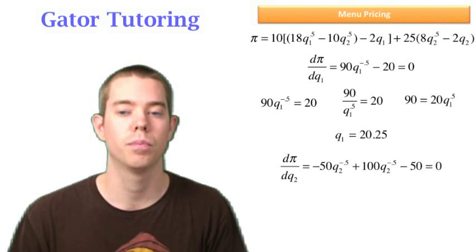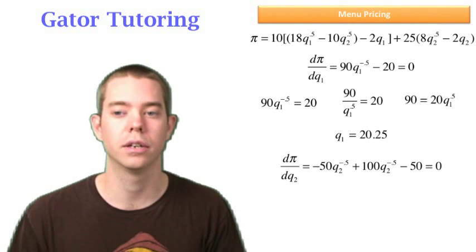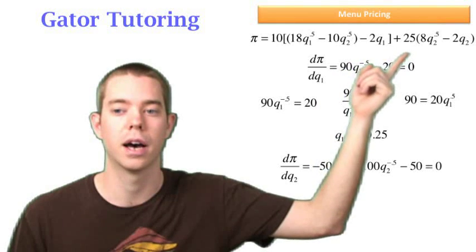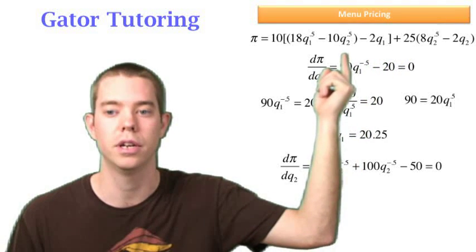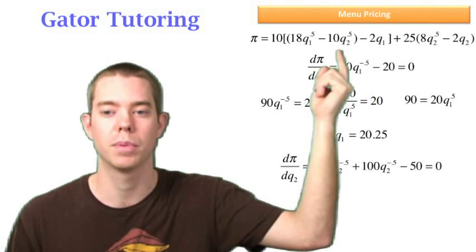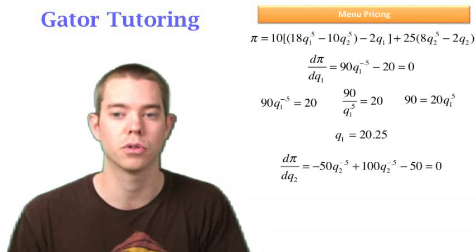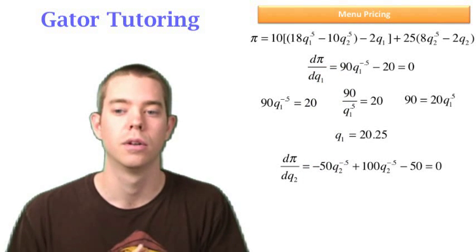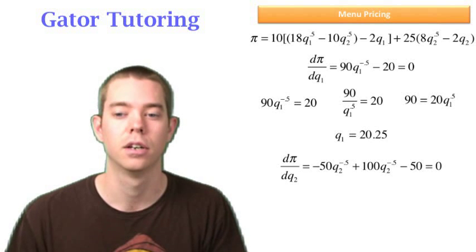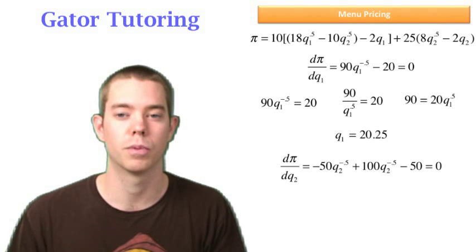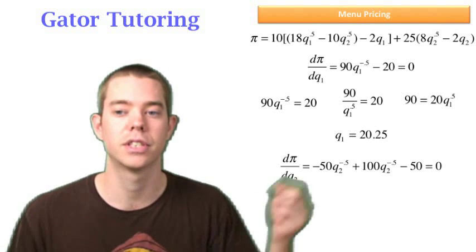So now I can do the derivative with respect to Q2. Be careful, there's not only a Q2 over on this side but there's also a Q2 over here. So that first one, that'll be negative 100 because you have to distribute through that times 10. Negative 100 times 0.5 is negative 50. You make it raised to the negative 0.5 again, you drop one off the exponent. And the second part, 25 times 8, that gives you 200 times 0.5, that'll give me that positive 100.